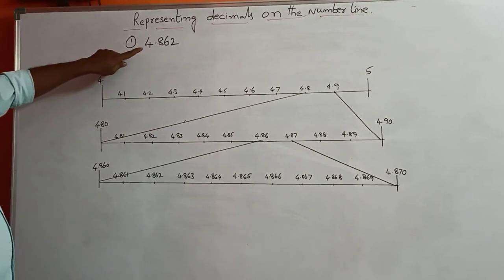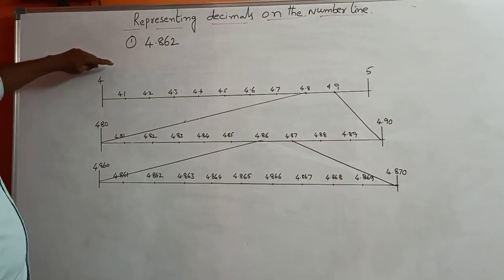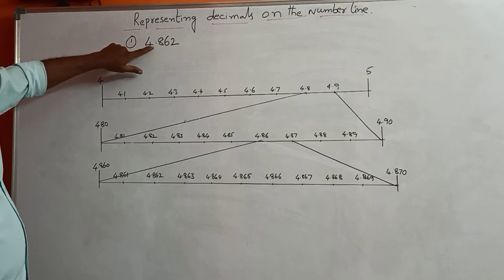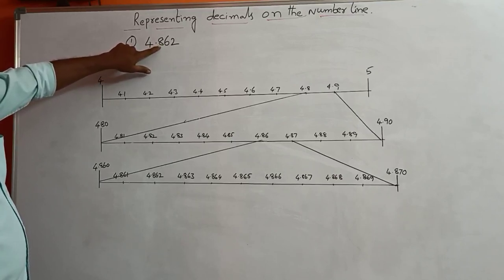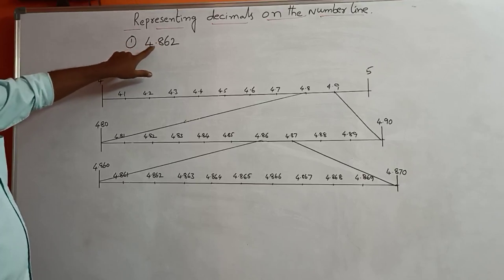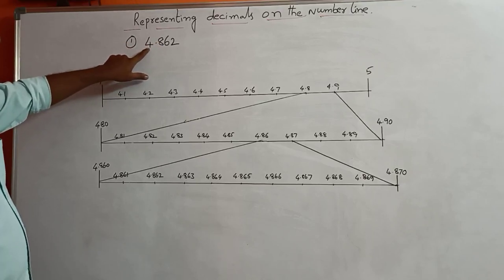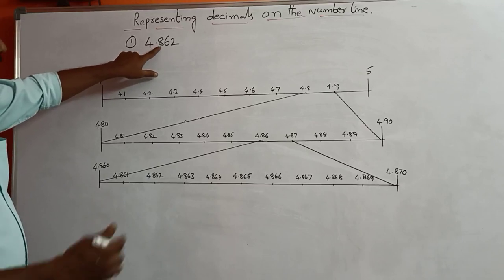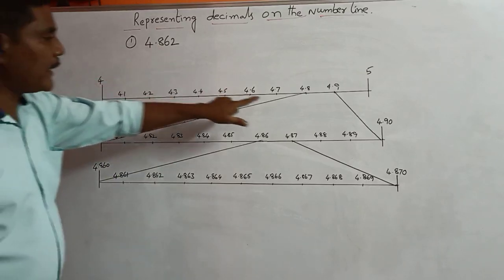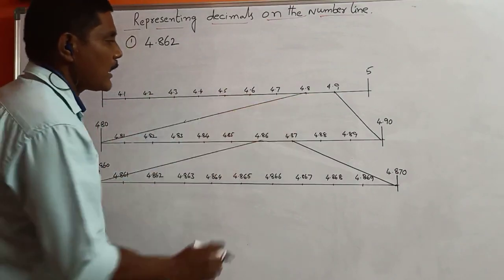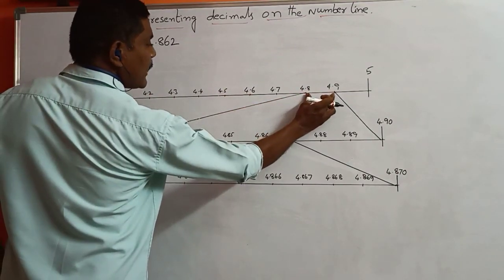Next, here the decimal after the point — the first decimal digit is 8. So we look at the segment from 4.8 to 4.9. The first decimal digit is 8, so we divide again from 4.8 to 4.9.